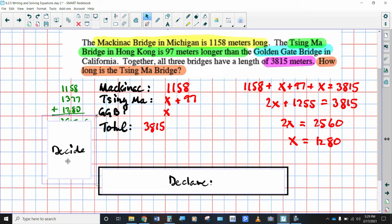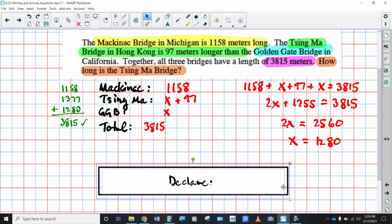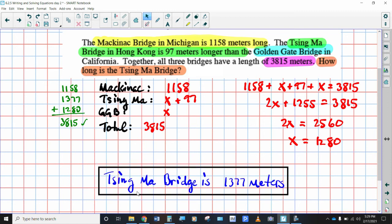When they add together, they get 3815. Yes, we do. So we know we've got the correct solution for the Golden Gate Bridge. And using our definitions, we should have the correct measurement for the Tsing Ma Bridge as well. So we had to declare for the Tsing Ma. So we'll say the Tsing Ma Bridge is 1377 meters long.